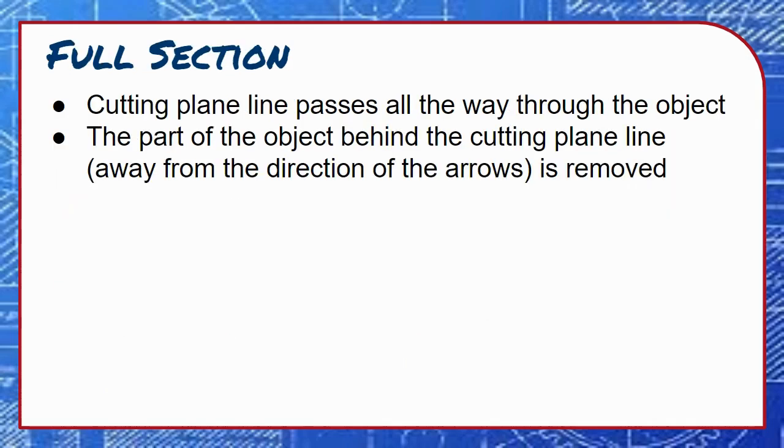In a full section, the cutting plane line passes all the way through the object. The portion of the object behind the arrowheads is removed and the cut object is seen in the direction of the arrowheads.